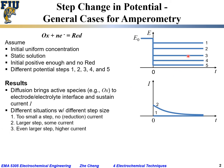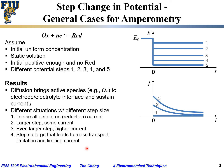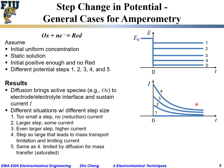For case 4, the potential step is large enough — negative enough — to land directly in the mass-transfer-limited zone. It starts from the highest possible current and then begins to decrease. For case 5, the step is even more negative than case 4, but because the system is already limited by mass transfer, the current cannot be any larger. Therefore, cases 4 and 5 produce the same current profile versus time.